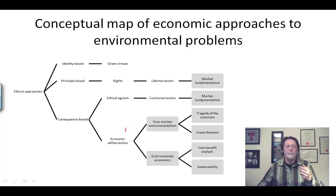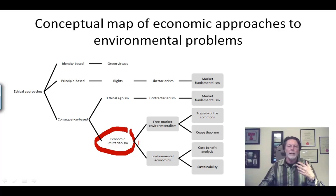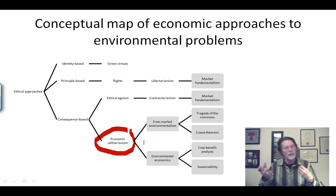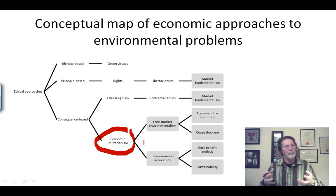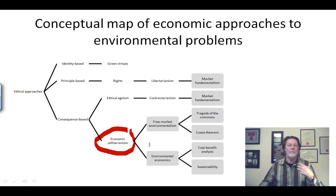It falls within the economic utilitarian approach to the environment. We're trying to maximize aggregate human welfare — it's anthropocentric, of course, concerned with the instrumental value of the environment. The market economy will only maximize welfare under conditions of perfect competition, and when there are market failures like external costs and environmental pollution, the argument breaks down. So environmental economics is a way to fix that argument.